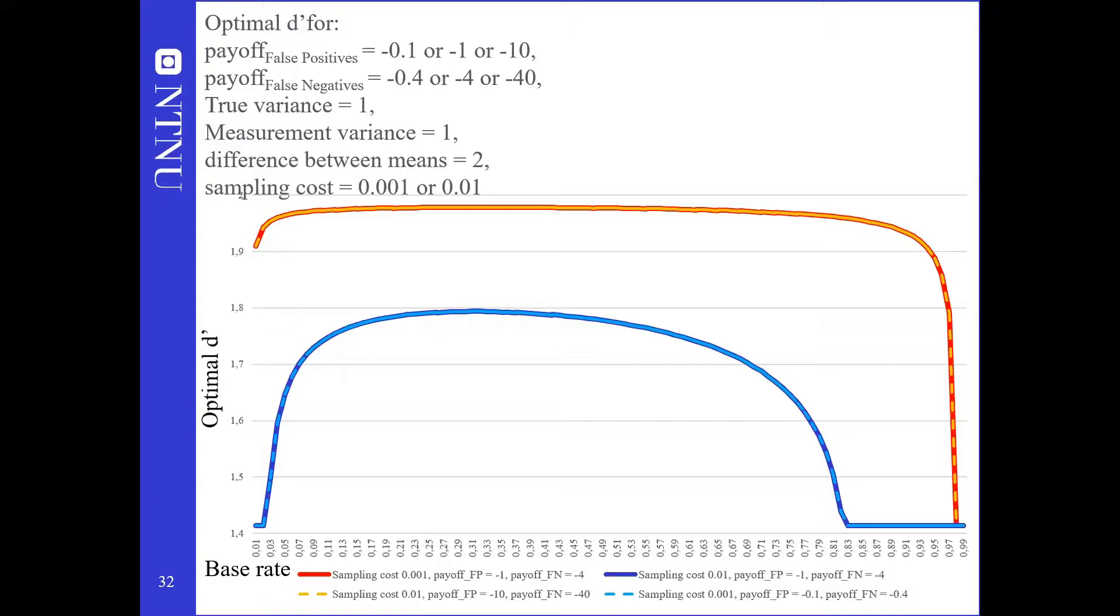We have already shown that sampling costs can dramatically change optimal d'. This graph shows four curves with optimal d'. It looks like two lines because we wanted to know whether it is the relative cost that matters. We have no closed form solution for the derivative of the total cost function but this numerical result indicates that as long as the ratio between payoffs and sampling costs is the same, the optimal d' are the same. Payoff minus 1 and minus 4 and sampling cost 0.001 give the same result as payoff minus 10 and minus 40 and sampling cost 0.01. The same applies for the other two pairs of payoff and costs.